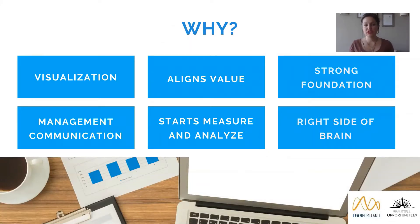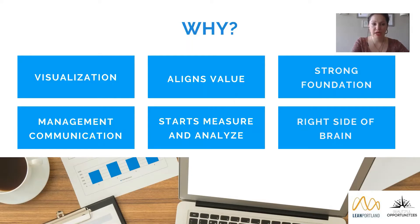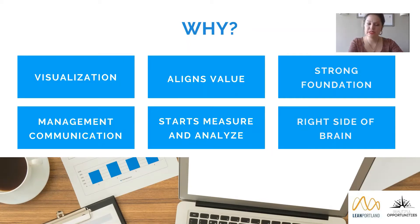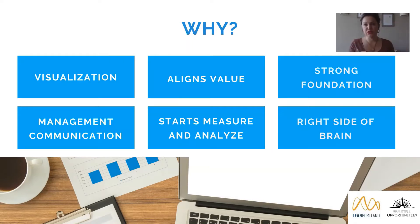Why would this be an activity you'd want to do with your team? It's an easy visualization that gives people something they can look at and get a wide variety of information about your process from, which makes it easier to communicate to management. It helps you align values so everybody's talking about outputs in the same way, understanding what measures are most important. That alignment of the team helps you kick off your measure and analyze phases. It starts to open up that right side of the brain and get those creative juices flowing, which you'll really need when you move into your improve and analyze phases.